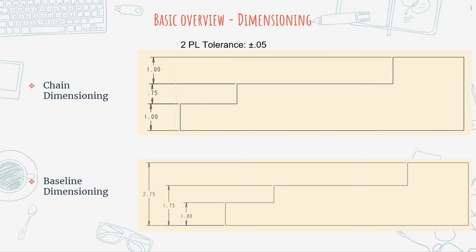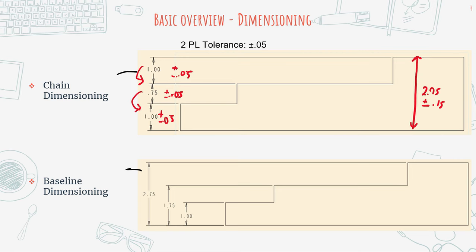The way that we use dimensions on the drawing plays a big factor into understanding the tolerances. For example, when we stack dimensions — what's called chain dimensioning — we are actually stacking the tolerances. Which means that if you wanted to get the dimension from top to bottom, the actual dimension is going to be 2.75 plus or minus 0.15. These dimensions are stacked on top of one another like a chain, so the final tolerance is also stacked to plus or minus 0.15.